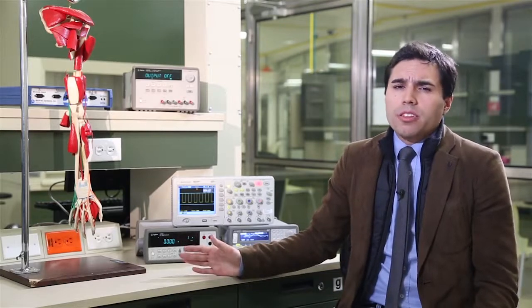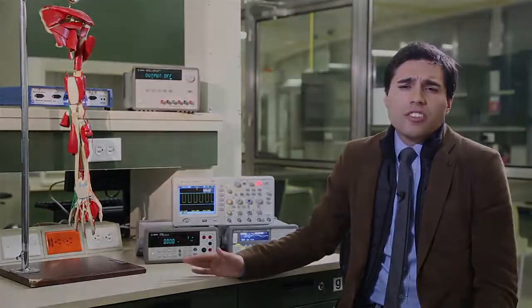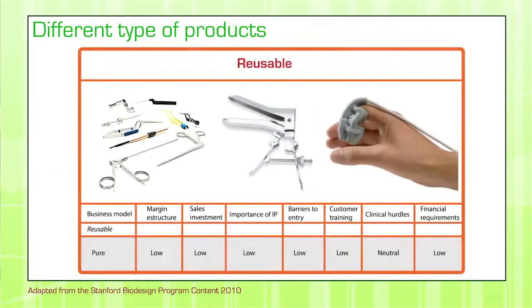The next type is the reusable business model. These are devices — mainly surgical or other medical devices — that are not as long-lasting as capital equipment, but not as single-use as a disposable. A reusable can be used a certain number of times, either through sterilization or because it's non-sterile, and it undergoes a number of use cycles before ultimately being disposed. Products from surgical tools to pulse oximeters fall into this category. The price cost can be higher than disposables because they can be used more than once.